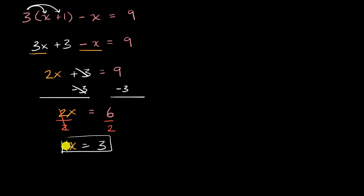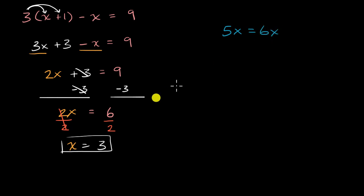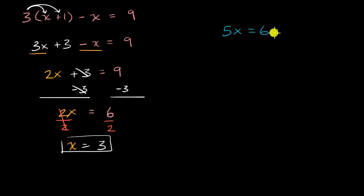Now let me finish off with an interesting challenge. If I have five x is equal to six x, one temptation might be that it looks like the last step we had. So why don't we divide both sides by a common factor — maybe we could divide both sides by x, since this is five times x and this is six times x.